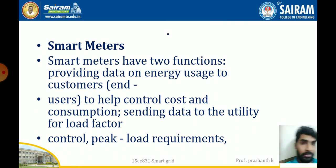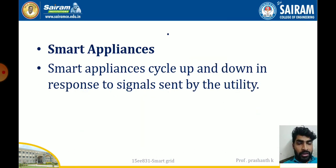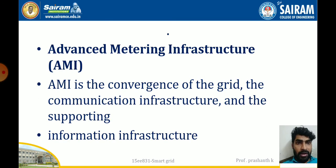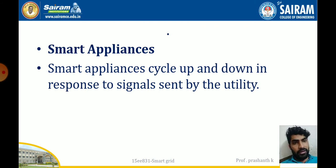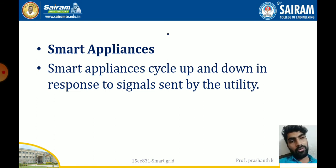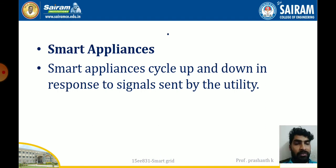Next, we have smart appliances. Smart appliances have a cycle-up and cycle-down response to signals from the utility. Since smart appliances consume power with variations in voltage and current levels, smart appliances are needed to reduce energy usage and energy charges per revenue.